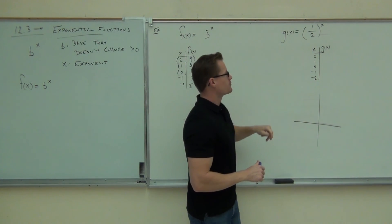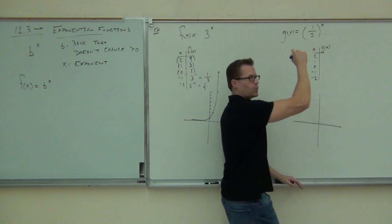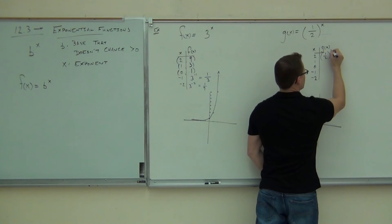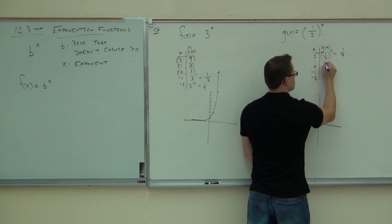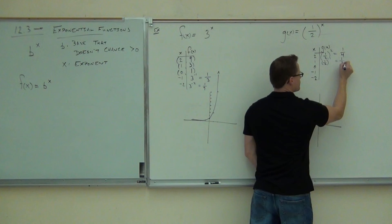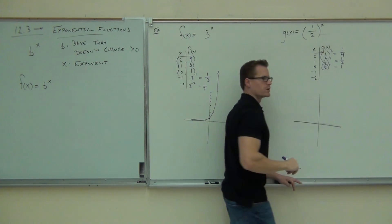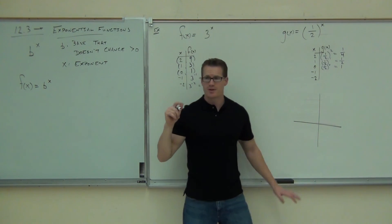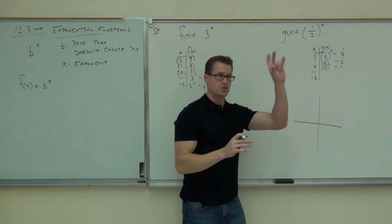Now let's look at one-half to the X. If I plug in two, one-half to the second power gives you one-fourth. One-half to the first power gives you one-half. One-half to the zero power gives you one. Zero comma one again — for every exponential, anything to the zero power gives you one. So zero comma one should be on every one of our graphs unless we shift it.